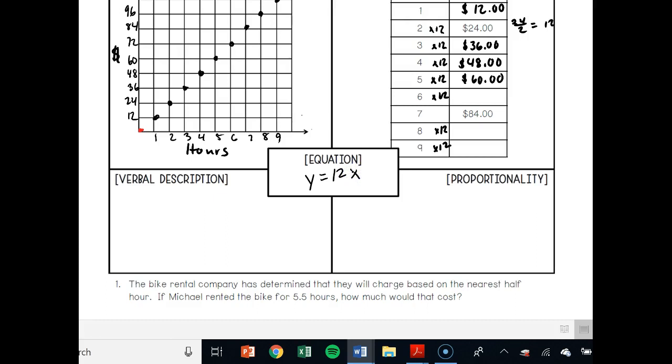So a verbal description is going to be simple. A bike rental company rents bikes to tourists. They charge $12 per hour to rent a bike.